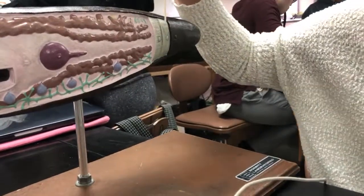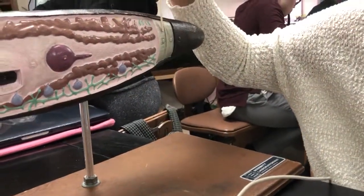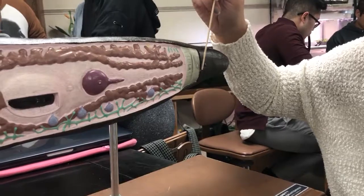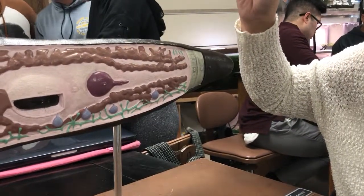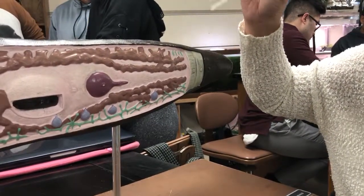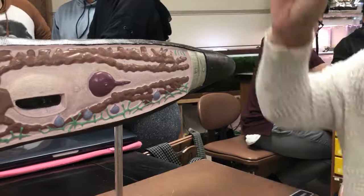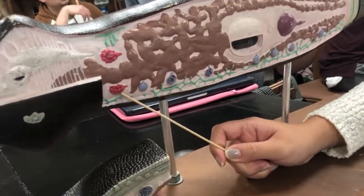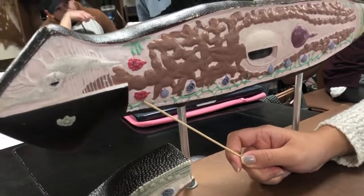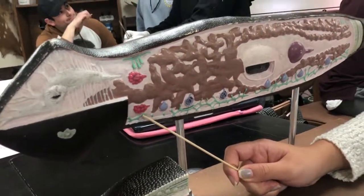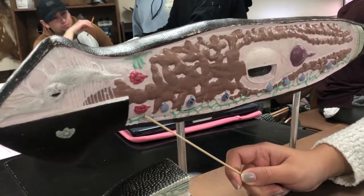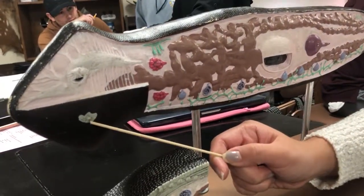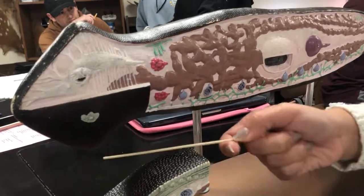You have your longitudinal muscles, your circular muscles, your ovaries, your eye spots — or your ocellates — and your auricles.